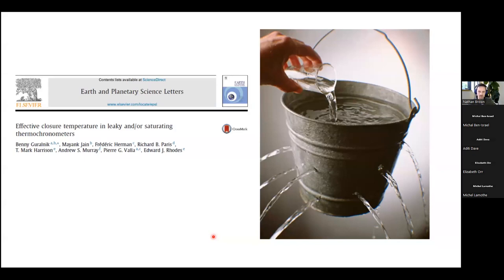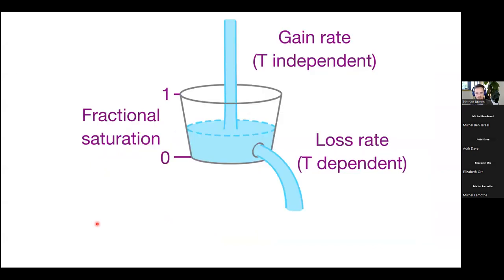So when we're thinking about using luminescence for thermochronology, the analogy that I like best is this leaky bucket analogy that Vinnie Duralnik did a good job of laying out in this paper. So in this scenario, we can think of the gain rate and the loss rate. The gain rate is independent of temperature. It only depends on how radioactive is your body of rock. And the loss rate depends strongly, depends exponentially on the temperature.